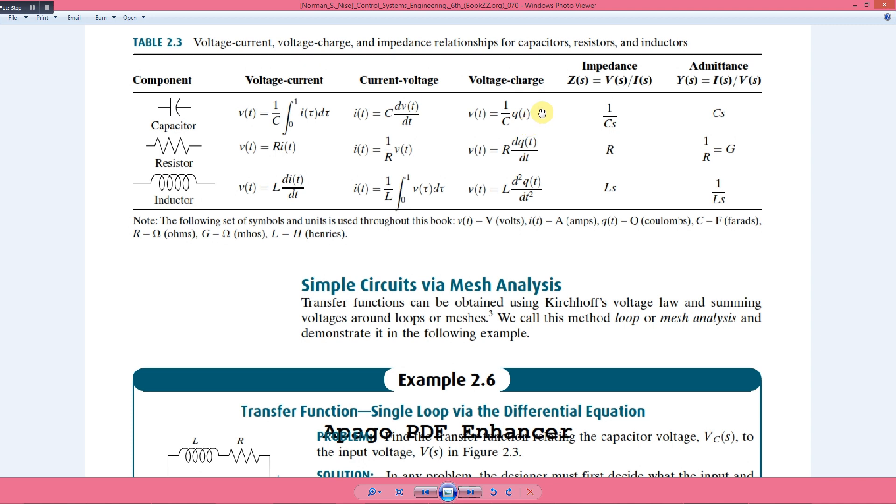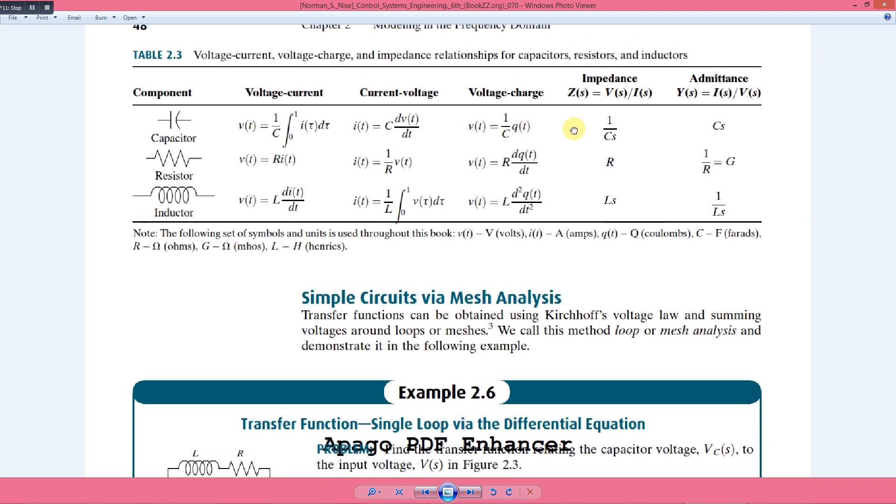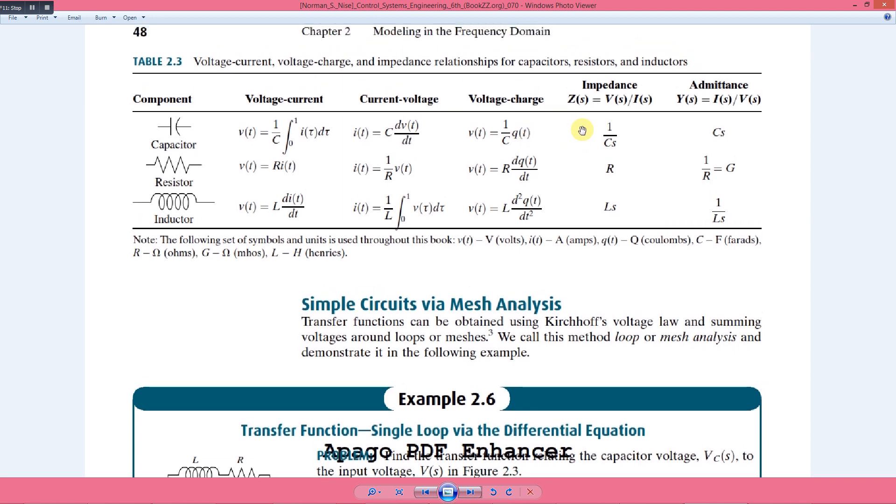Or v is equal to 1 over C into q. And now its impedance in Laplace transform: we have its impedance 1 over Cs, and admittance is the inverse of the impedance, it is equal to Cs.